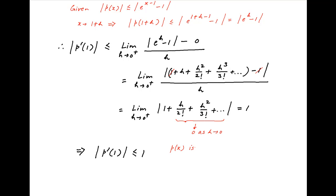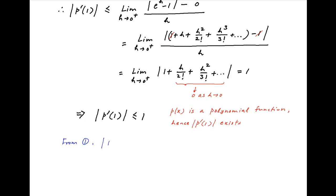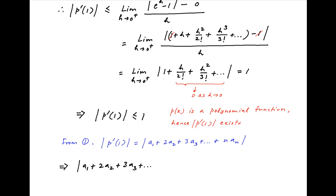Note that p(x) is a polynomial function, which implies p(x) is differentiable and therefore |p'(1)| exists. From Result 1 we already know that |p'(1)| = |a1 + 2a2 + 3a3 + ... + n·an|. We have also established that |p'(1)| ≤ 1. Therefore, we have the required result: |a1 + 2a2 + 3a3 + ... + n·an| ≤ 1.